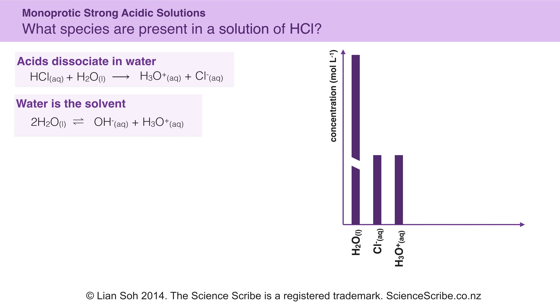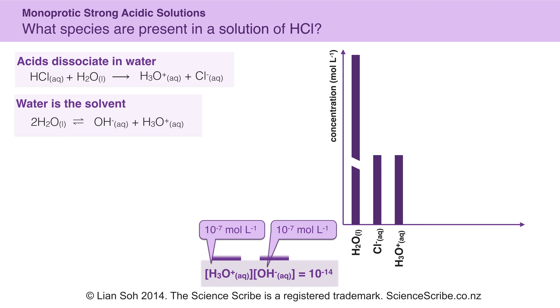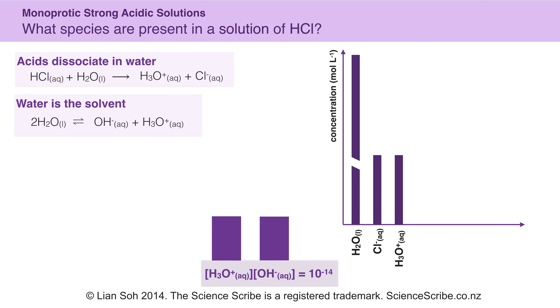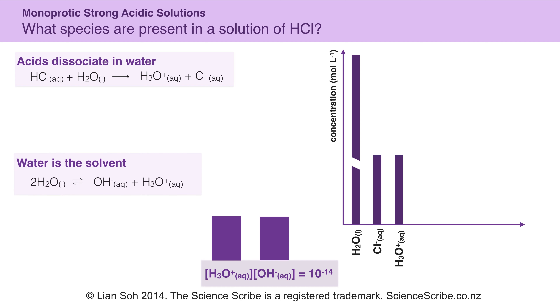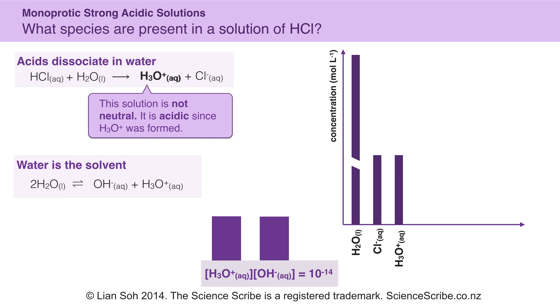Water is still my solvent. If this were a neutral solution, hydronium and hydroxide would have the same concentrations. But it's pretty evident from my equation that because I'm forming hydronium ions, I have an acidic solution.